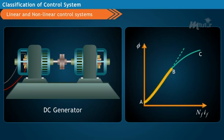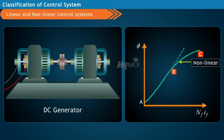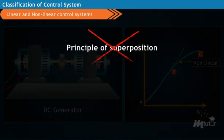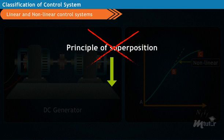Initially, the curve is linear but later on it gets saturated, which shows non-linear behavior because it doesn't obey the principle of superposition. Such a system is called a non-linear system.